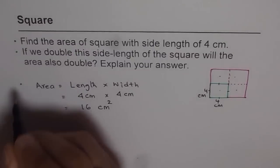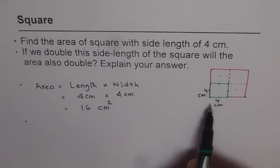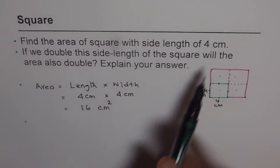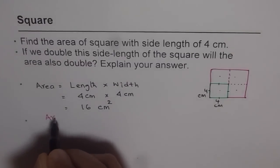So we got answers for the first one. That is, area of the square, 4 cm by 4 cm, is 16 cm squared. But if we double the sides of the square, does the area also double? No. Area does not double. If you double, area becomes how many times?